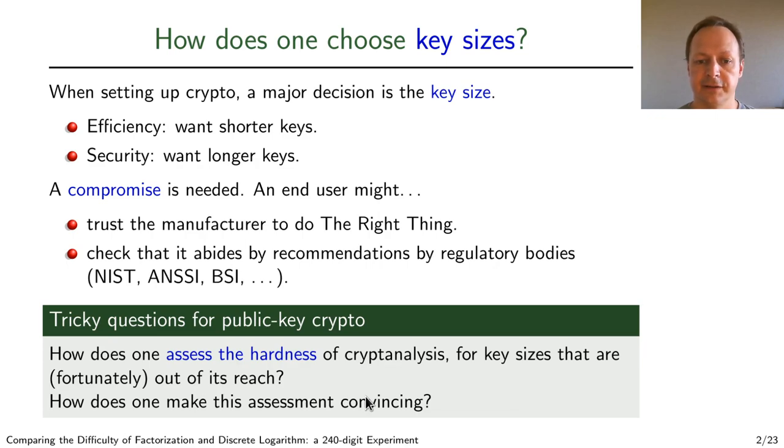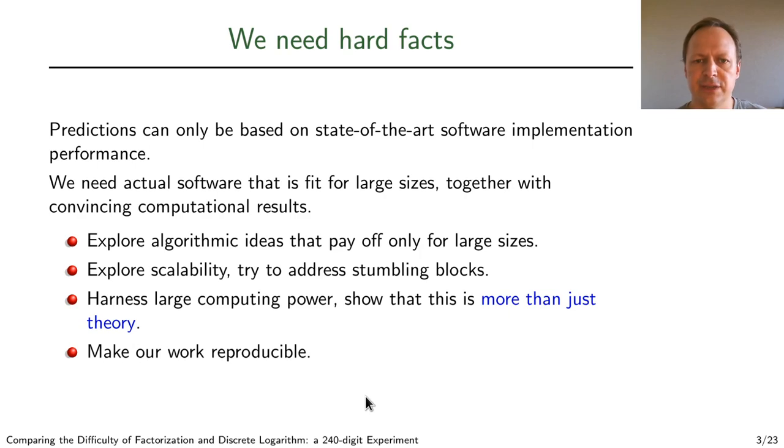We have to base them on hardness assumptions, but these hardness assumptions have to be based on assessments of cryptanalysis for key sizes that by definition are out of reach. So how do we make these assessments convincing? We need to base our assessments on hard facts. Predictions can only be based on state-of-the-art software implementation performance. We need actual software that is fit for large sizes, together with convincing computational results. Explore algorithmic ideas that pay off only for large sizes. Explore scalability, try to address stumbling blocks. Harness large computing power, show that this is more than just theory. Make our work reproducible.